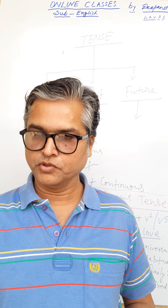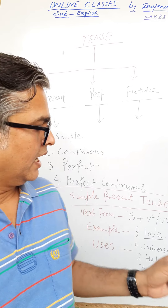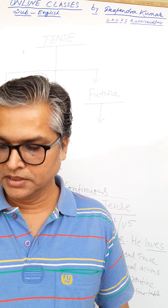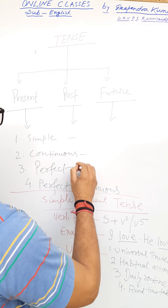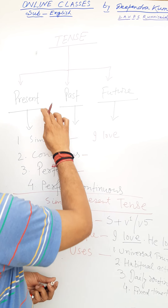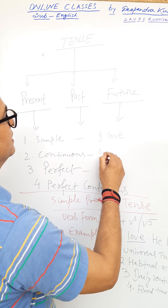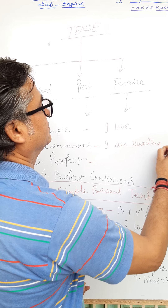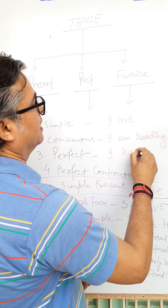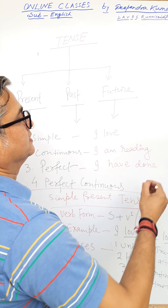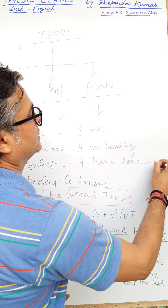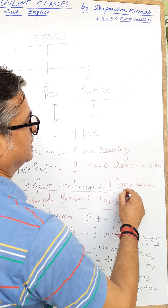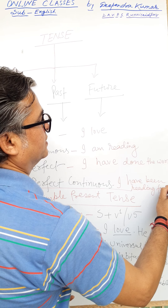You have to learn the first person, second person, and third person singular and plural forms. For example: 'I love' — this is singular, simple present tense. 'He loves' — also singular but third person. 'I am reading' is present continuous. 'I have done' is present perfect.